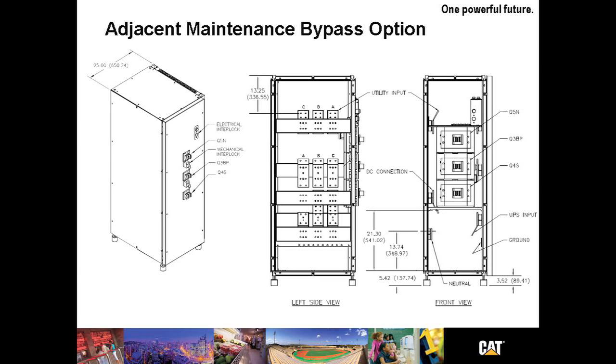The adjacent maintenance bypass option provides a three circuit breaker option for external wraparound and bypass for the system. Electronic interlocks are used in combination with Kirk keys. The matching cabinet is 26 inches wide. A remote version of this is available as well through special order.